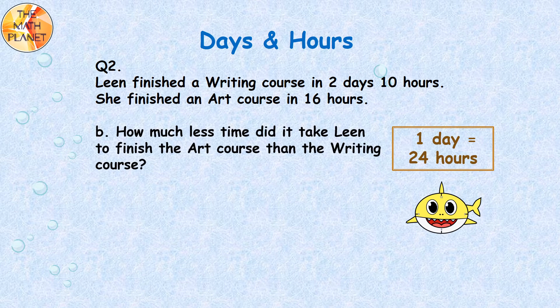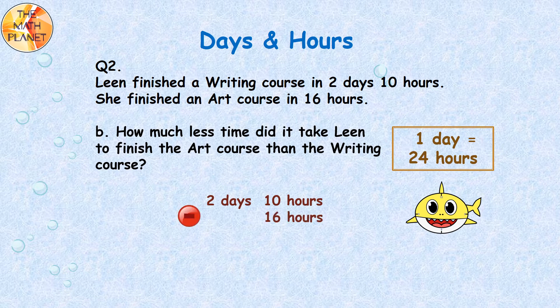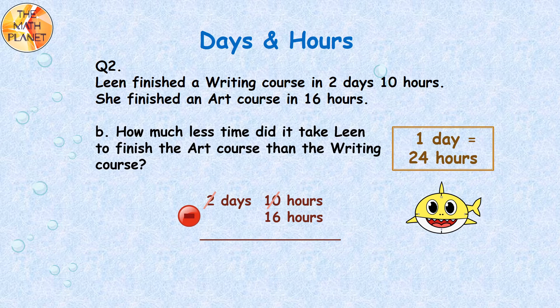Now let's solve question B. How much less time did it take Lynne to finish the art course than the writing course? The subtraction equation is 2 days 10 hours minus 16 hours. We start subtracting from the hours. 10 minus 16 — we cannot take away 16 from 10, so we regroup. We cross 10 hours and cross the 2 days, following the rule 1 day equals 24 hours. When we take away 1 day, we have 1 day left and add 24 hours, giving 34 hours. The difference will be 1 day and 18 hours.